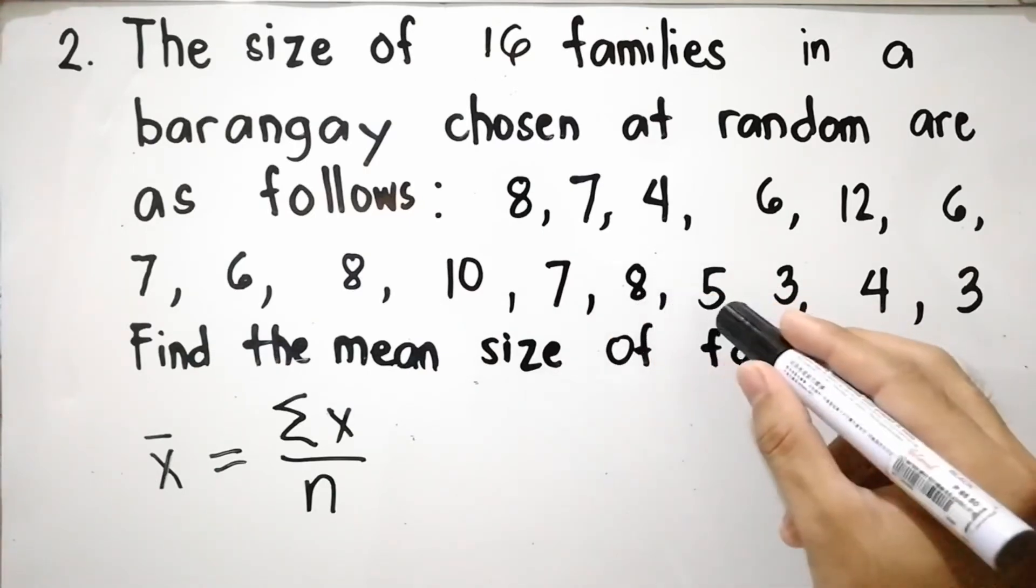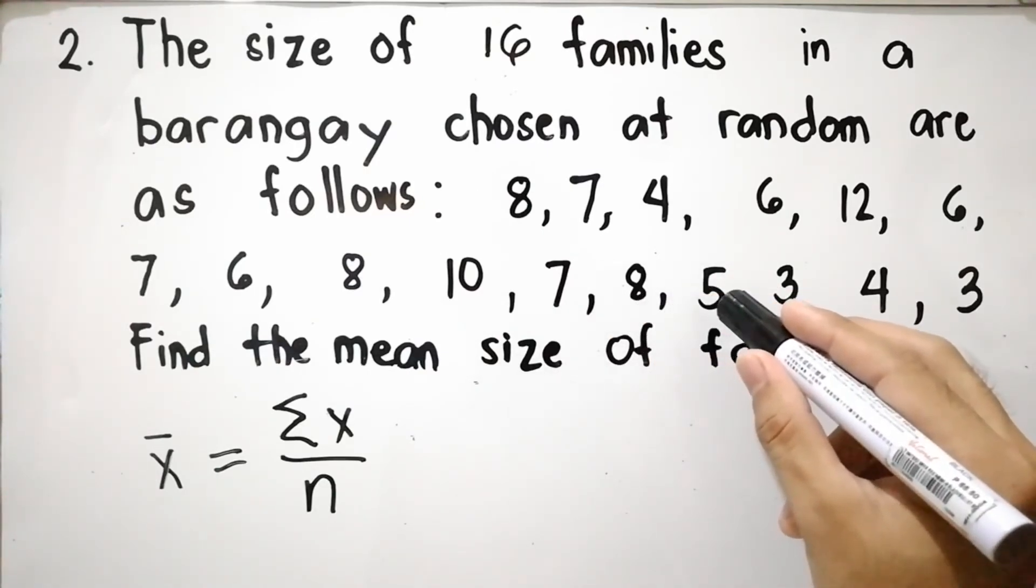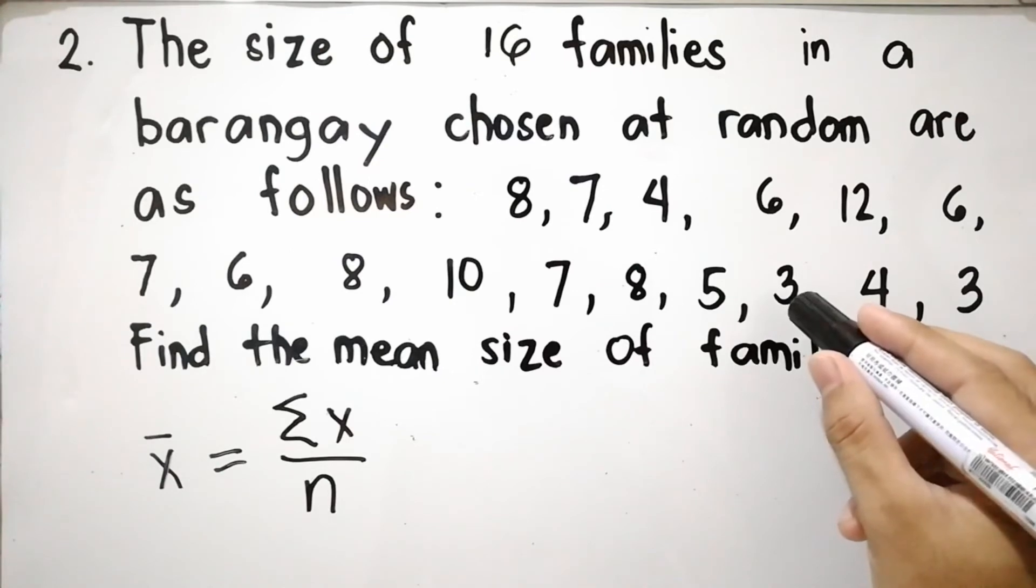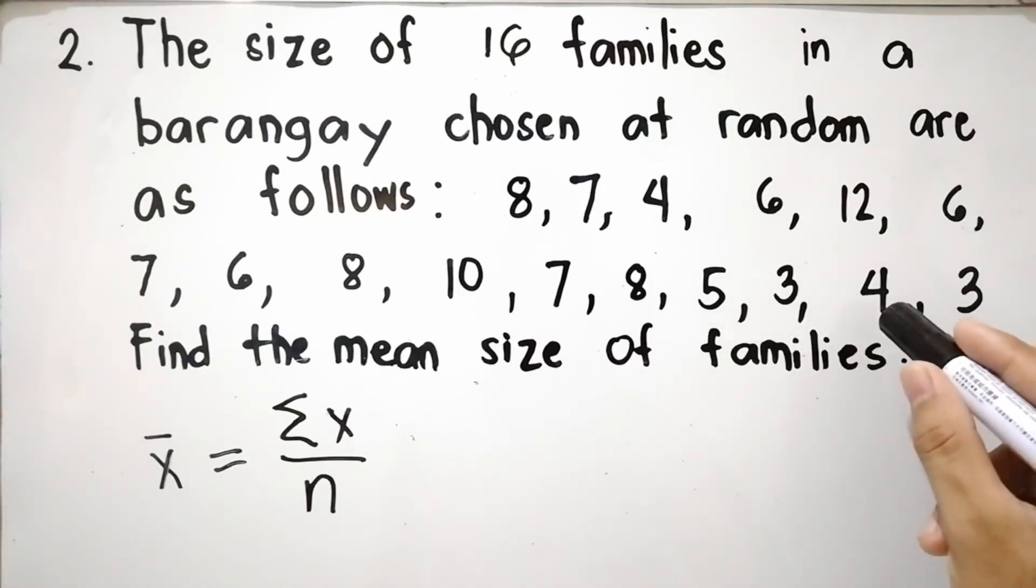Plus 8 equals 89, plus 5 equals 94, plus 3 equals 97, plus 4 equals 101, and plus 3 equals 104.